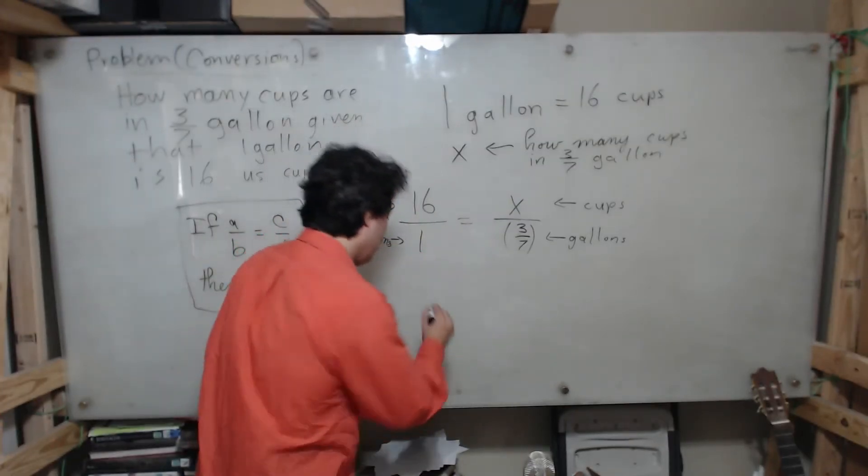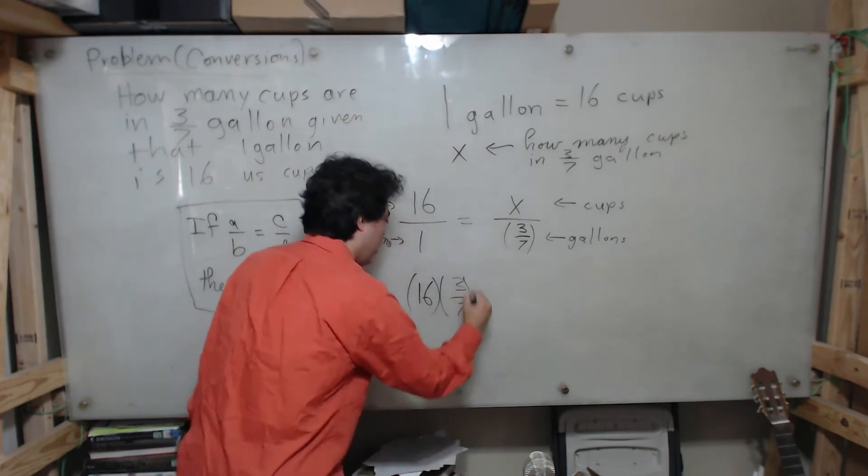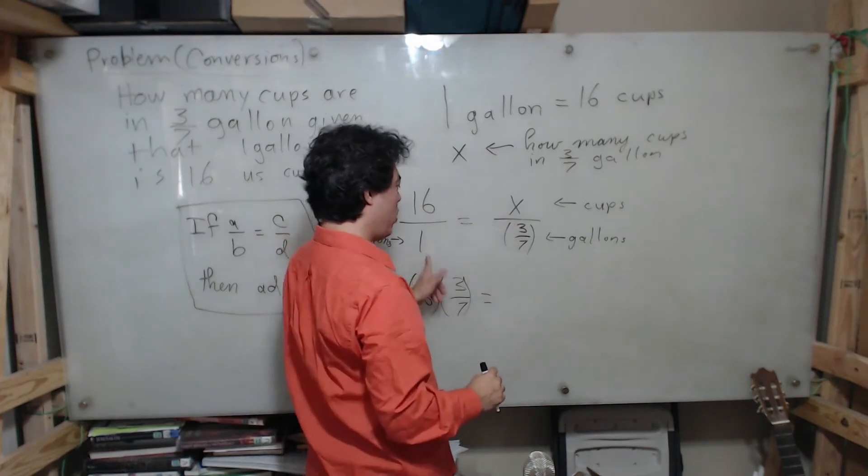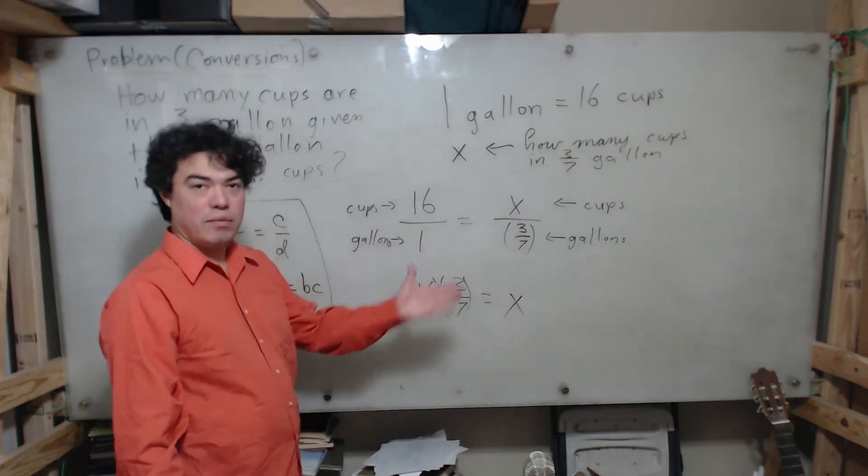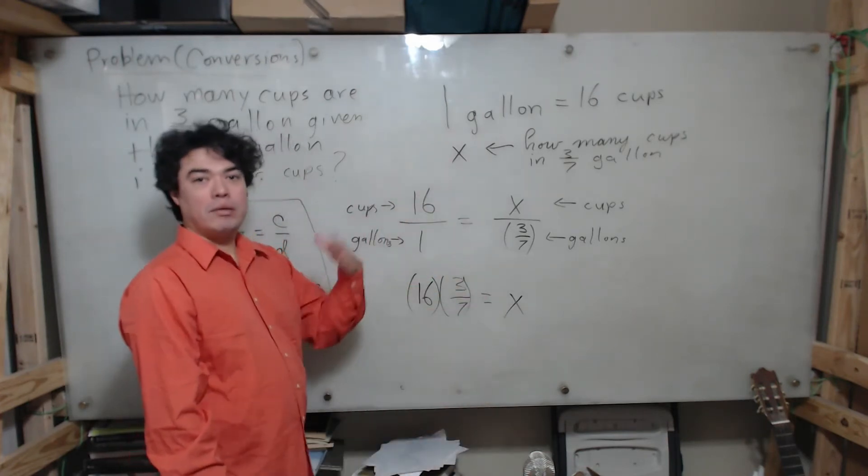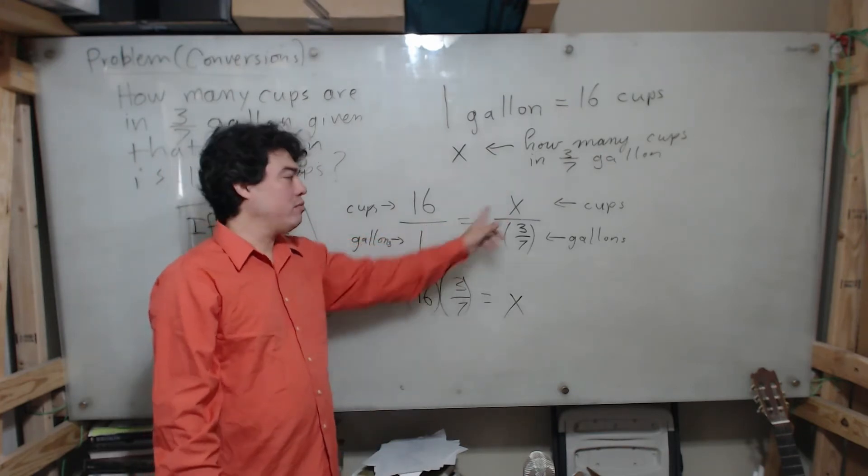And so automatically we see that if a over b equals c over d, then a times d - so 16 times 3 over 7 - will equal b times c: one times x. That's just x, because one times anything is just the number that it is. So one times x, whatever x is, is x.